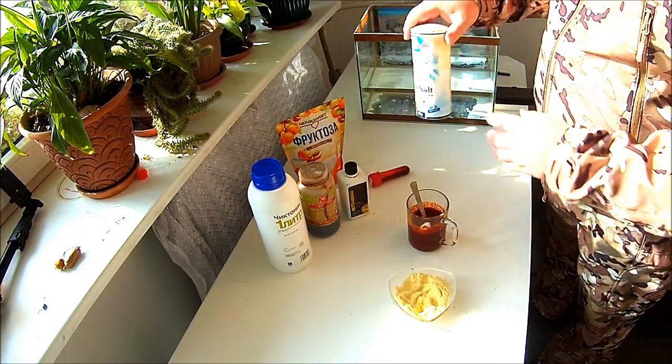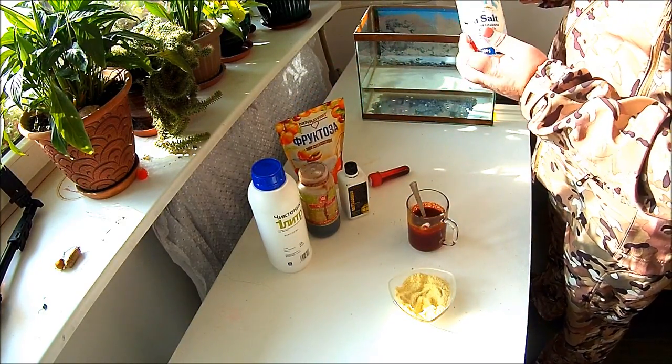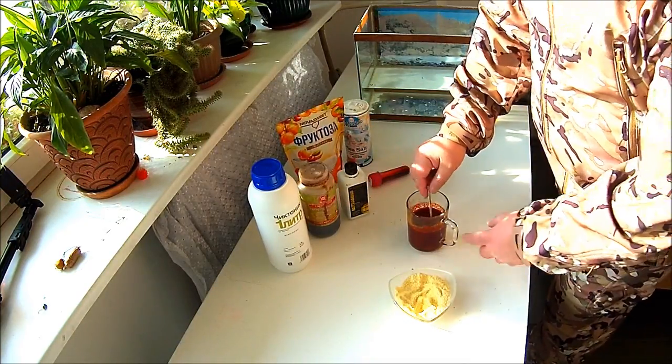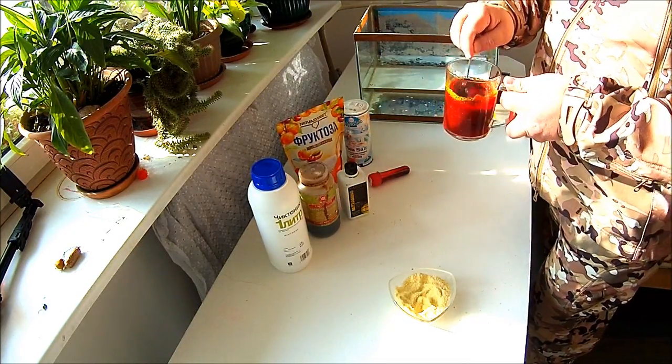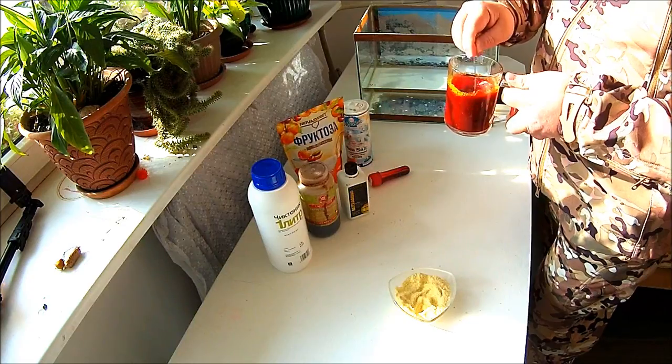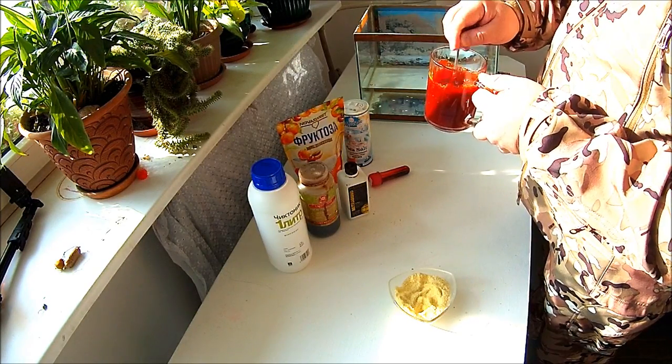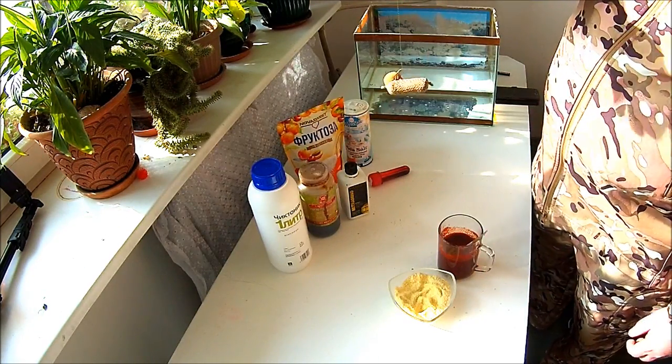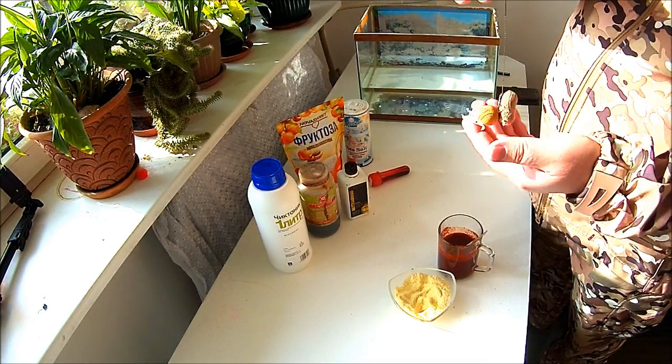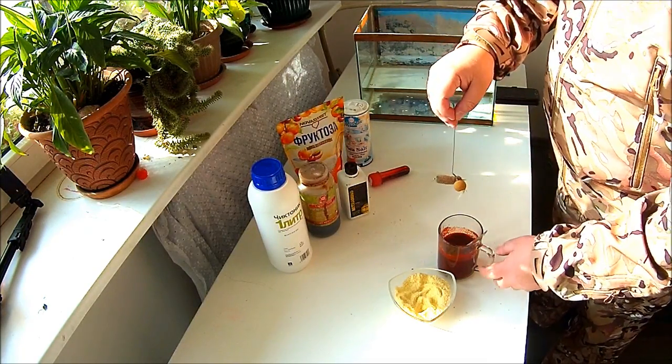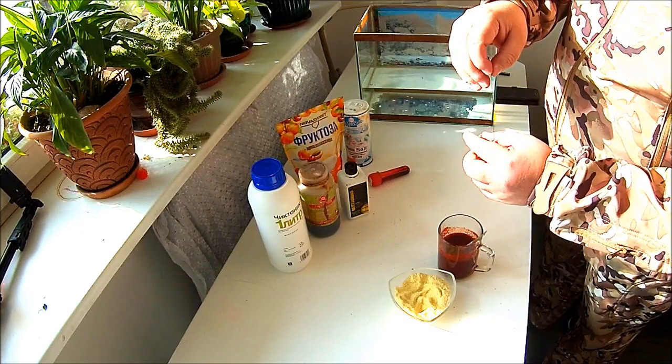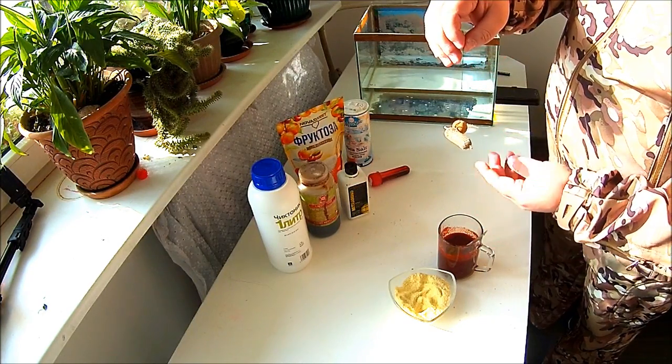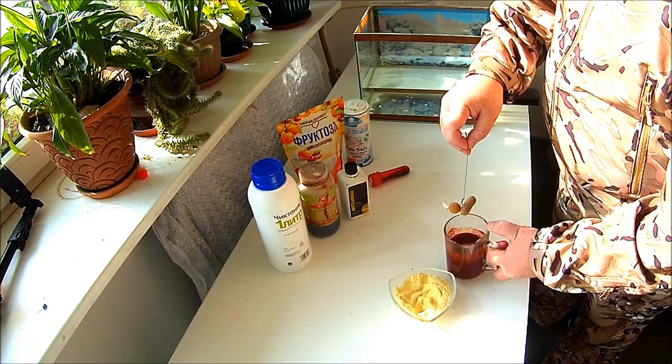Now I add fructose. You can add raw sugar, brown sugar, even NHDC. Now I add rock salt. I would like my dip to be very, very salty and very sweet.